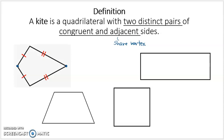A trapezoid is an example of something that's not a kite. It has two pairs of congruent and adjacent sides — this side is congruent to this side, and this side is congruent to that side, and they're adjacent. But they're not distinct — they overlap; they both share a side. Distinct means the two pairs have to be completely separate, so this is not a kite even though it has two pairs of congruent and adjacent sides.